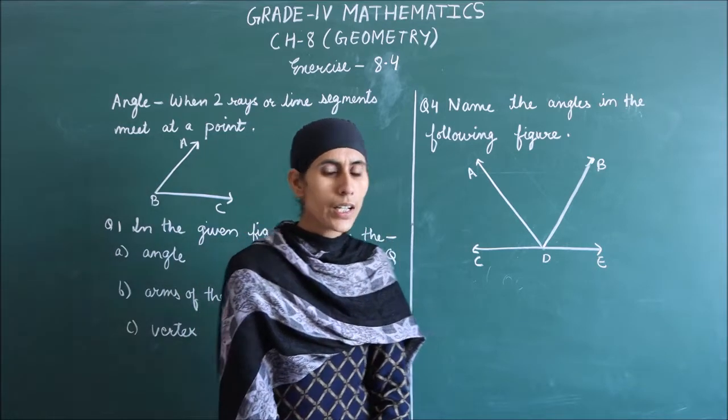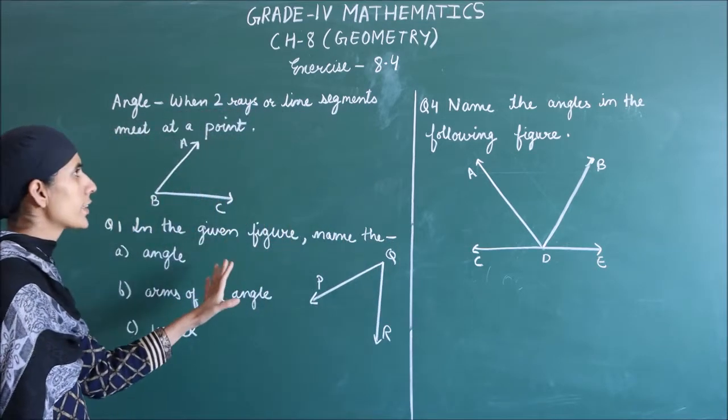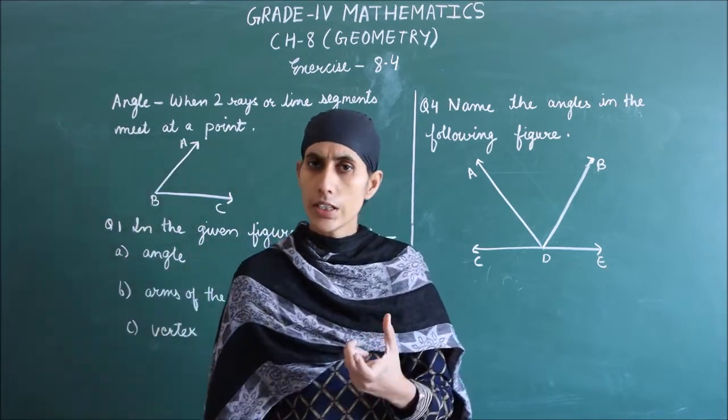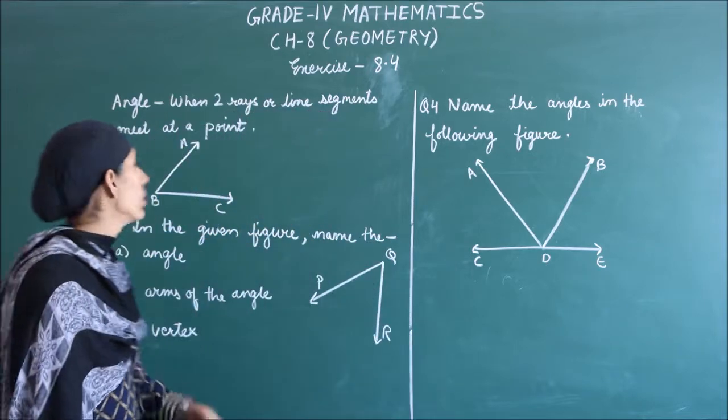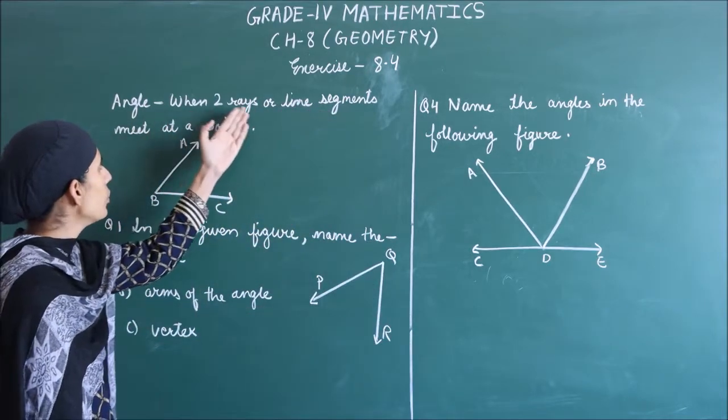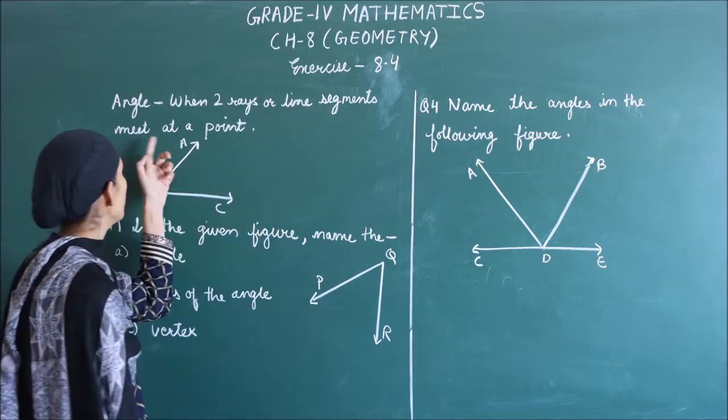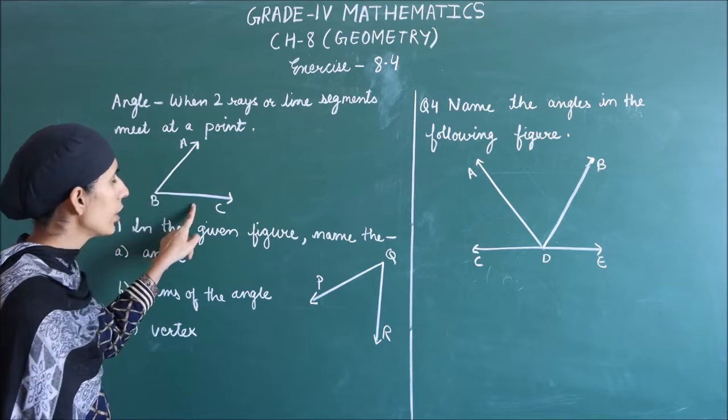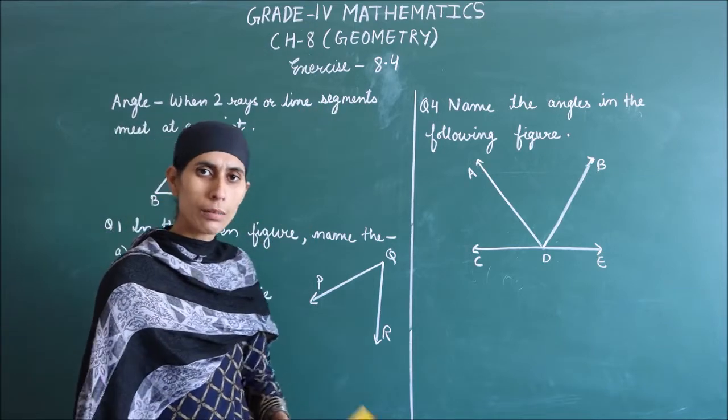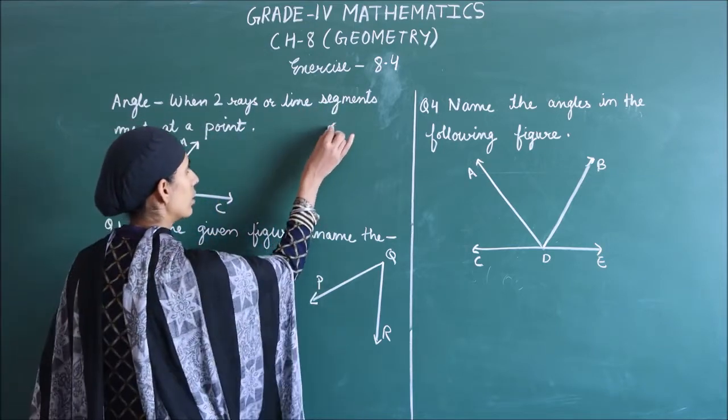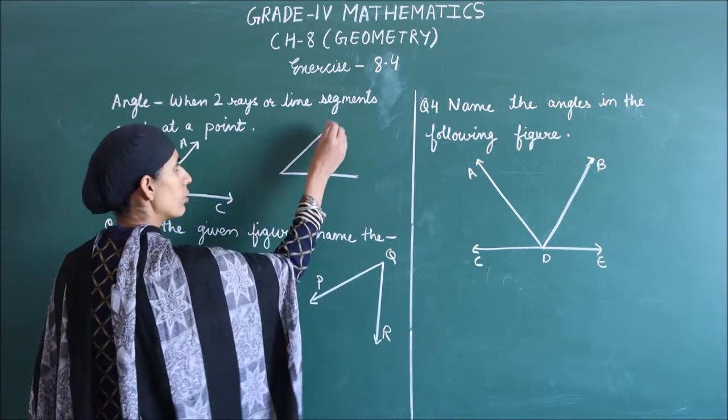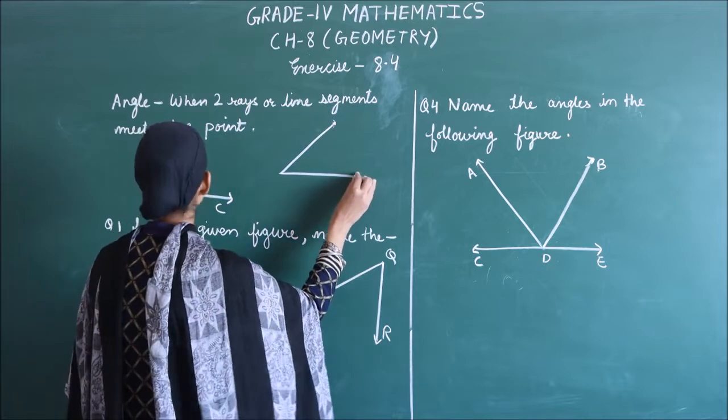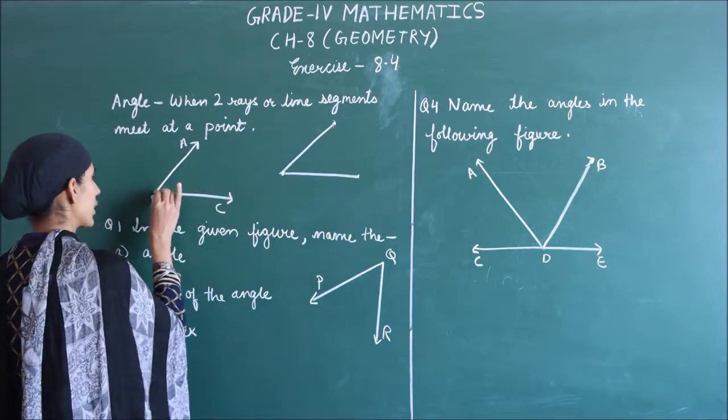So let's start. Your Exercise 8.4 is based on the angle. So first of all, we know what is the angle, what is the definition. When two rays or line segments meet at a point, this is a ray that I have drawn here, and then you draw line segments.